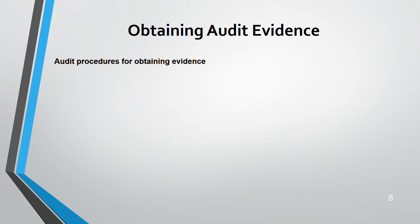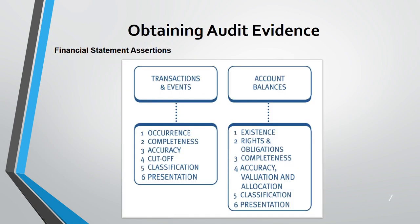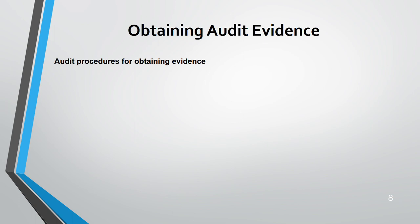We collect evidence to test these assertions. For example, take sales — whether a sale has actually occurred or not. We collect evidence from various sources to test whether the sale has occurred, testing the financial statement assertion of occurrence. In your exam they will give you the specific thing being tested. Now, audit procedures for obtaining evidence — in the next lecture we will go in depth through specific elements like non-current assets, stock, purchases, sales, and expenses.